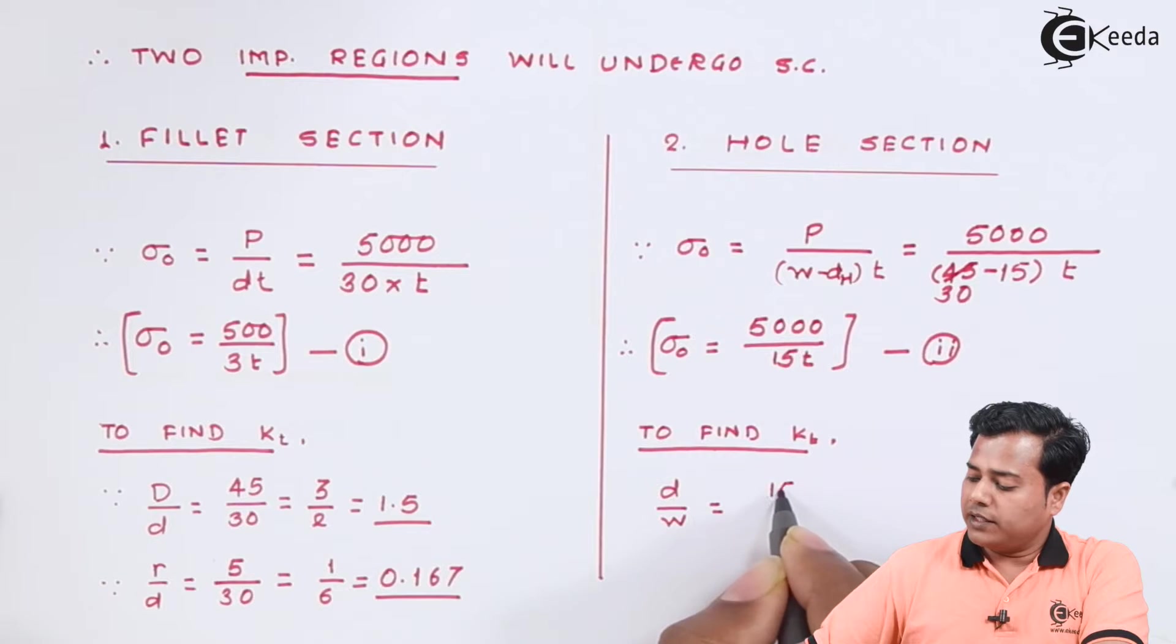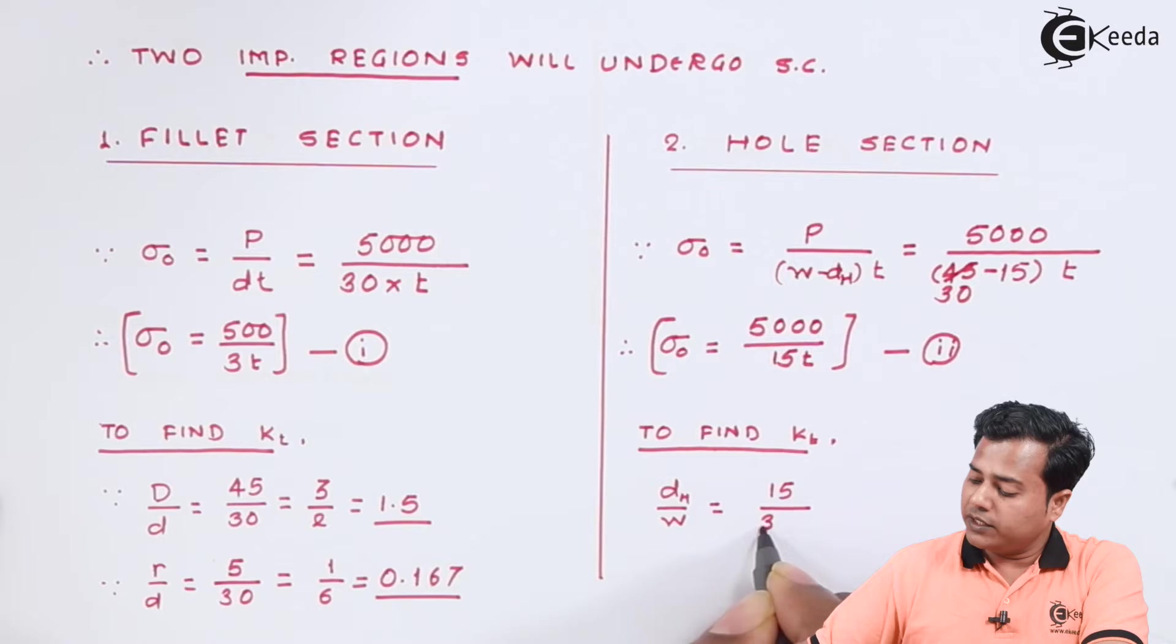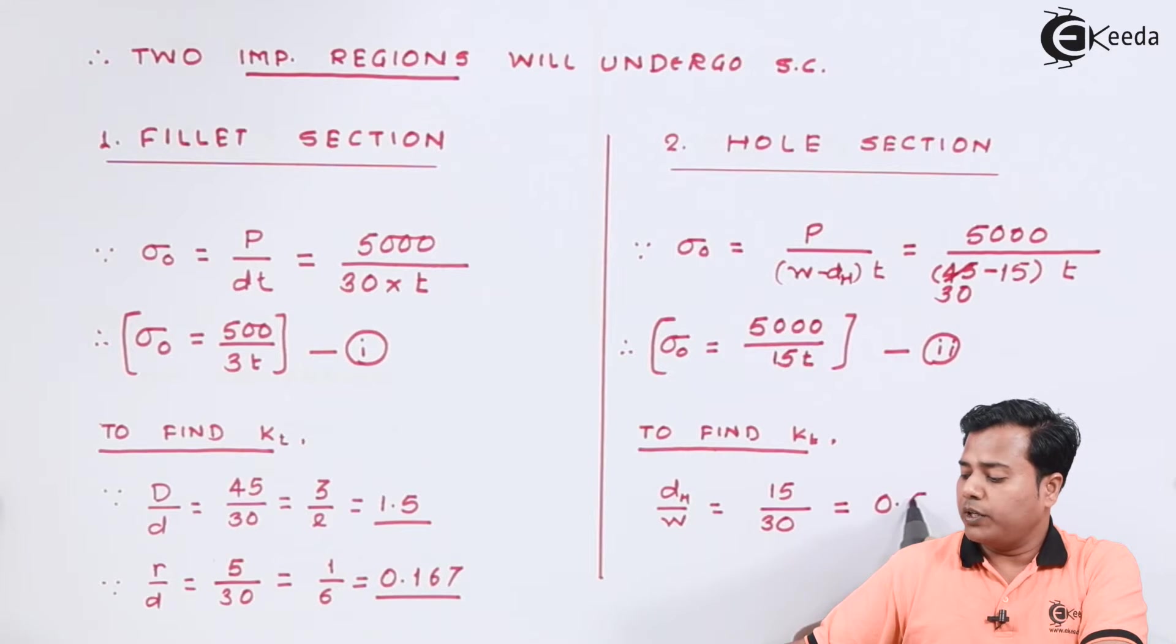So in that case this is the diameter of hole and this is the smallest width that we have which is 30. Stress correction factor becomes 0.5.